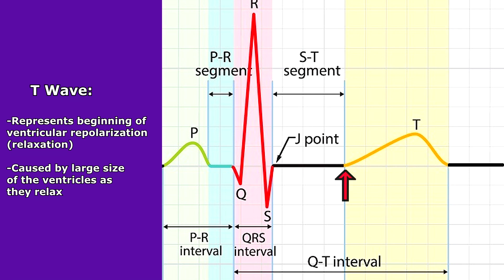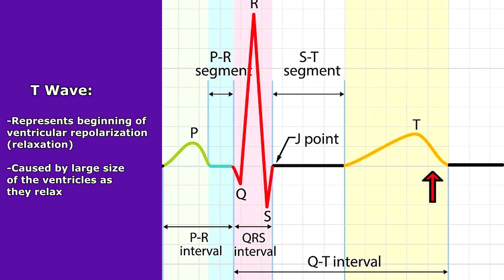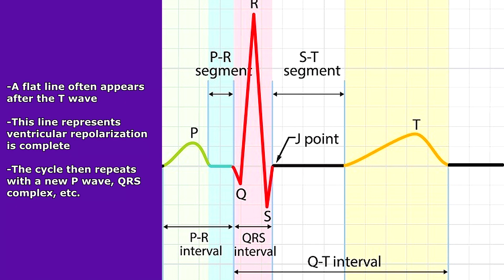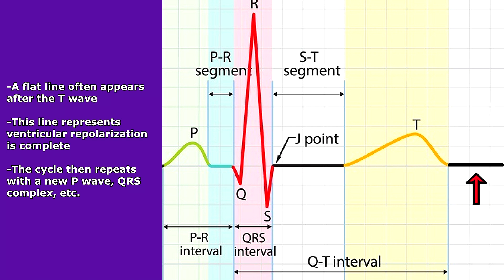Then we have the T wave. The T wave represents the beginning of ventricular repolarization, meaning relaxation. The ventricles are so big that whenever they relax it creates this T wave. After the T wave, you usually have a flat line representing that ventricular repolarization is complete — a flat, isoelectric line.